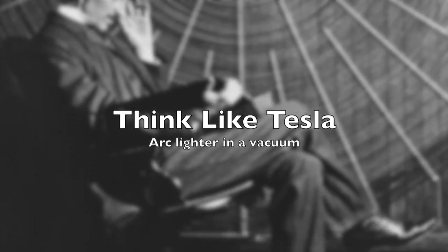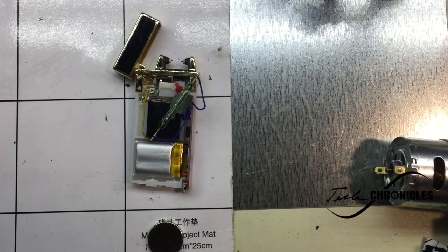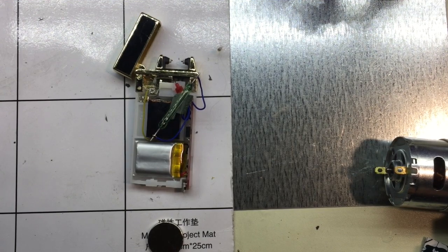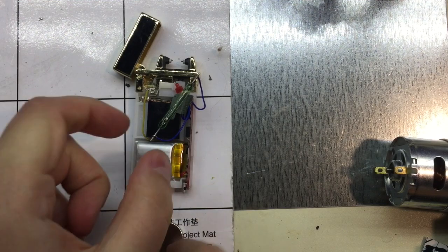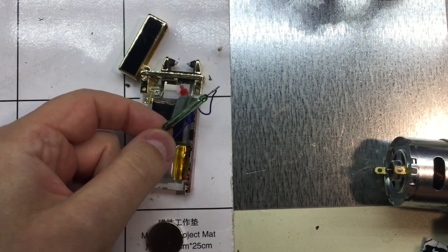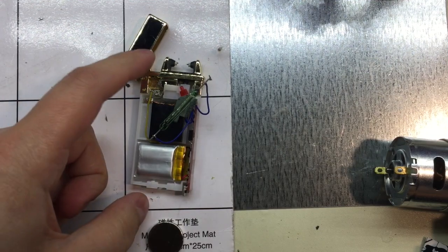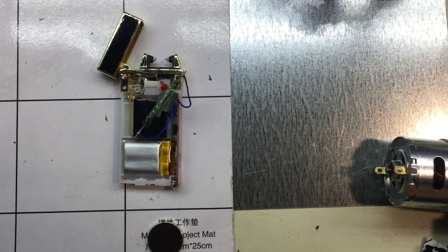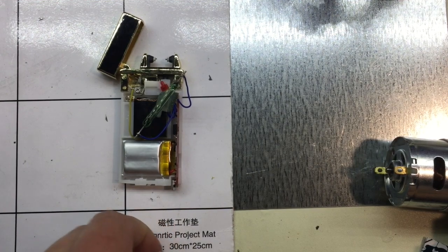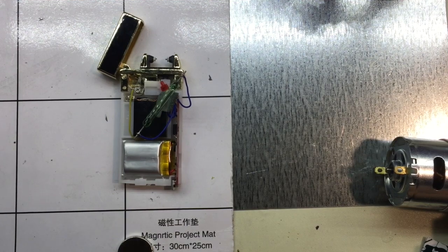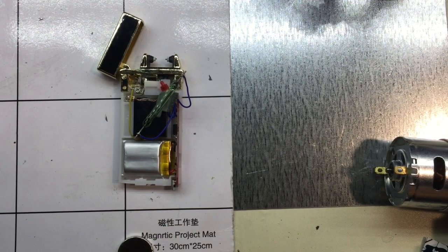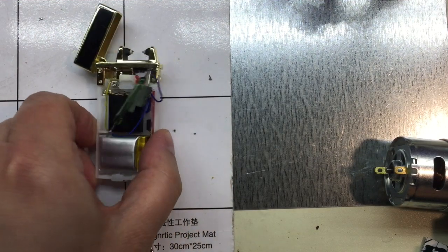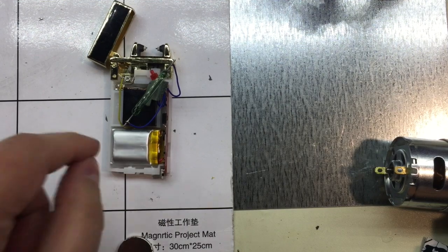Think Like Tesla. Instead of carrying a patch of butane around in your pocket, an arc lighter improves on this by letting you carry around an explosive lithium battery in your pocket instead.